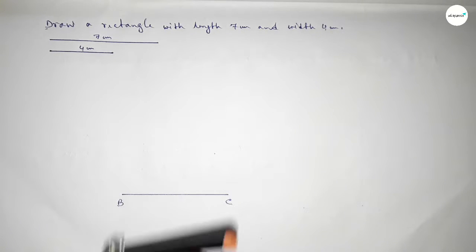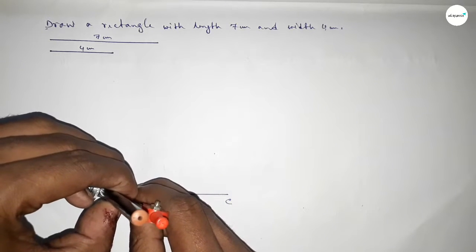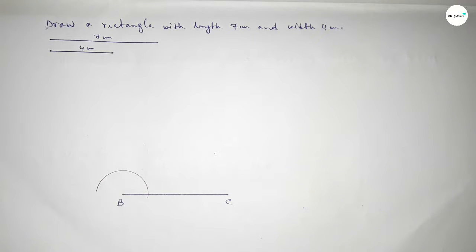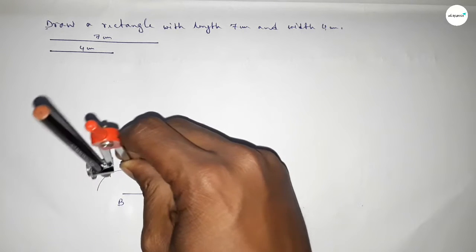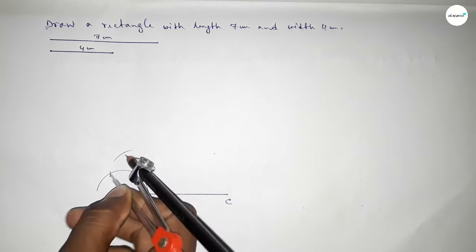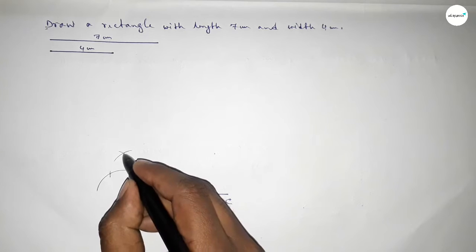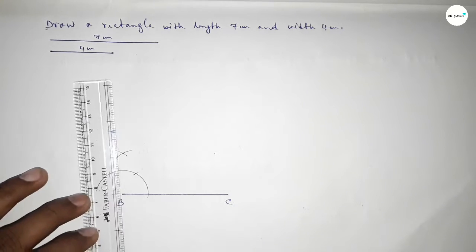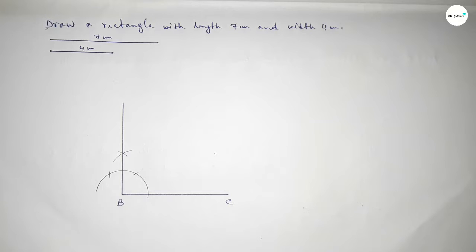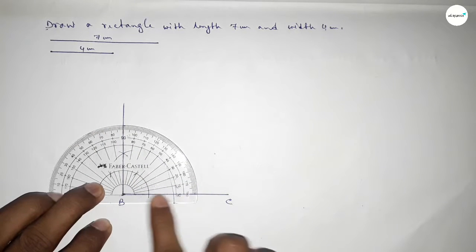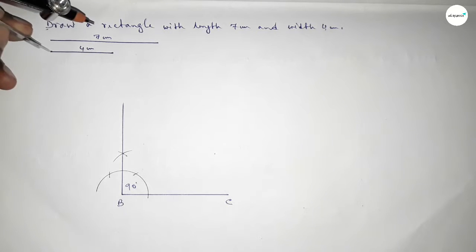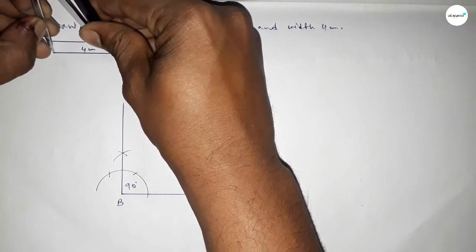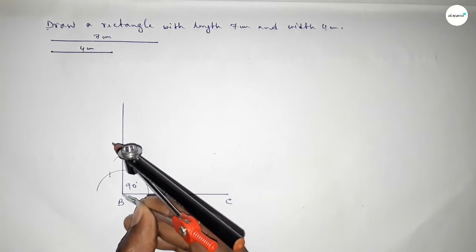Now putting the compass on point B and drawing a 90 degree angle. First putting the compass on point B and drawing an arc, then cutting here again with same length and cutting here, drawing an arc again with same length and cutting here. Both curves intersect at a point. Joining this side to get a 90 degree angle.